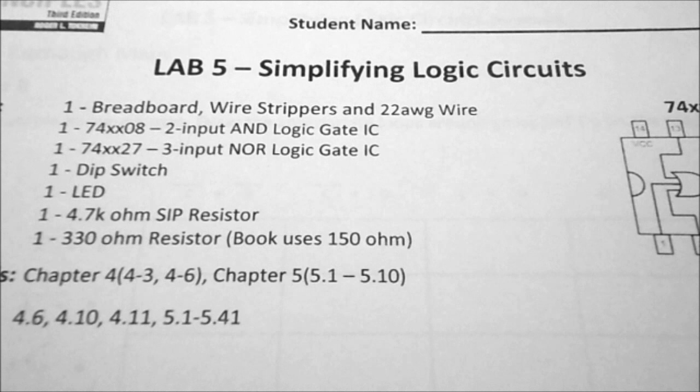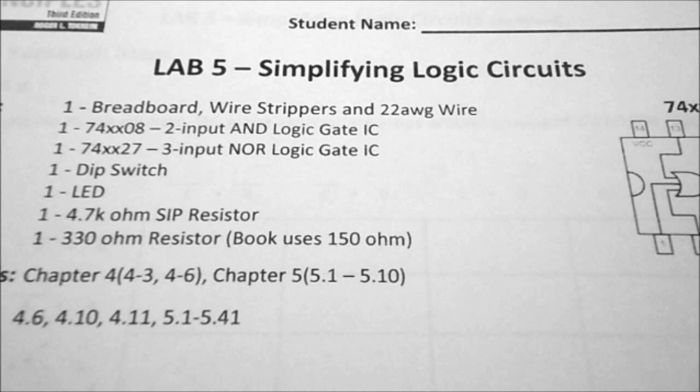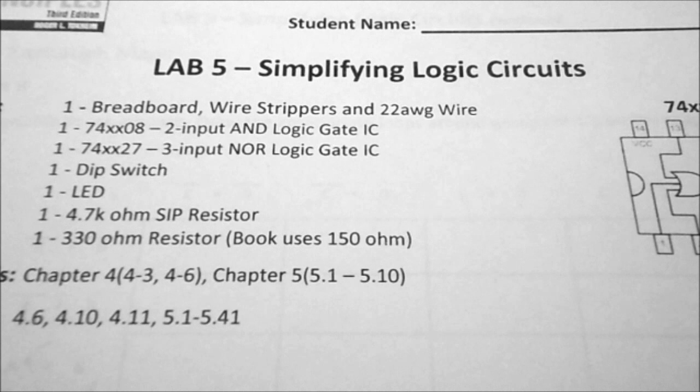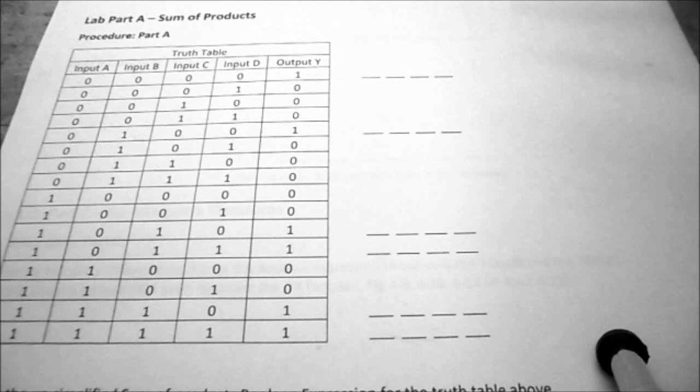Today we're going to take a little look at Lab number 5, simplifying logic circuits. There's really not a lot to this lab, but I will go over it in a little bit of detail. For this lab you can see that we're going to be using two logic gates: the two input AND gate and the three input NOR gate. I've given you the reference sections in your textbook and some solved problems that you can look over.